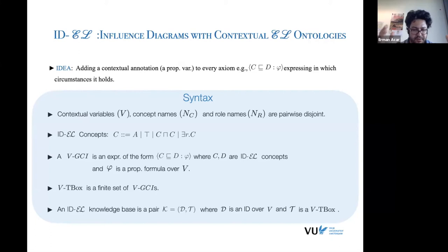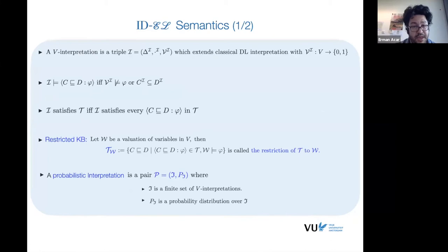And then, on the semantic side, the only extension we do is some sort of variable assignments. In addition to the classical domain set and the interpretation function, every interpretation would have some particular assignment to the propositional variables. And then what would follow is that whenever this assignment satisfies the attached or associated propositional formula, then we would expect that the classical description logic semantics to take over. So you can think of these particular different instantiations as a possible world semantics.